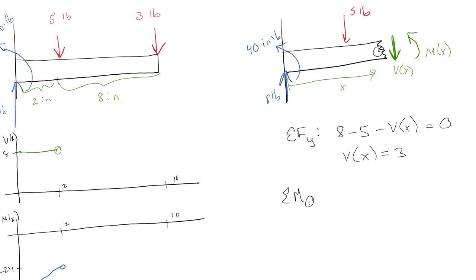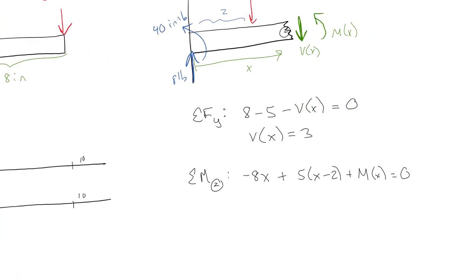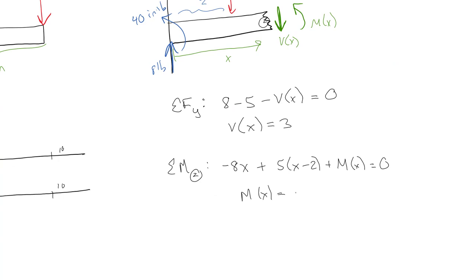Now let's do the sum of the moments around this point. I have negative 8 times x. The 5-pound force is at a distance of x minus 2, so that gives a positive moment: plus 5 times (x minus 2). Then the unknown moment drawn in positive equals zero. So M(x) equals 8x minus 5x plus 10.